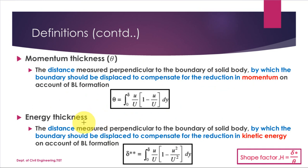The next term is energy thickness (δ**). Due to the formation of the boundary layer there is a reduction in kinetic energy. Energy thickness is the distance by which the boundary should be moved to compensate for that reduction. The equation is: δ** = ∫₀^δ (u/U)(1 − u²/U²) dy. There is also the shape factor H = δ*/θ, where δ* is displacement thickness and θ is momentum thickness.